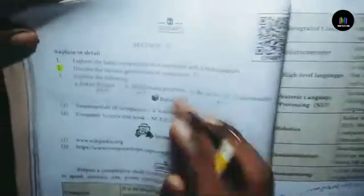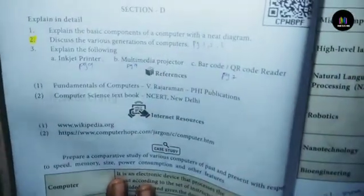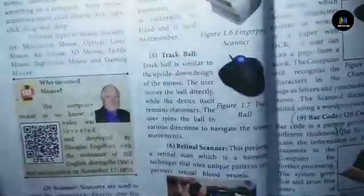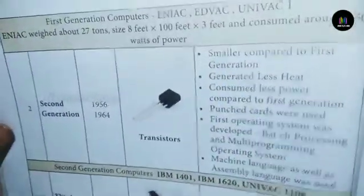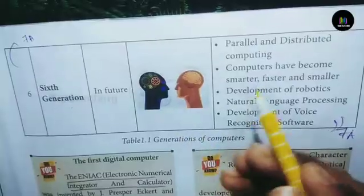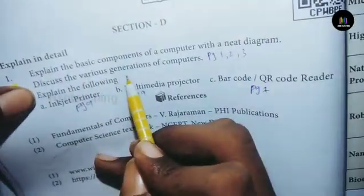Explain in detail. Explain the basic components of the computer with a neat diagram — this is very easy. Discuss the various generations of computer from pages 1, 2, and 3. Cover 1st generation with merits and demerits and diagram, then 2nd, 3rd, 4th, and 5th generations.